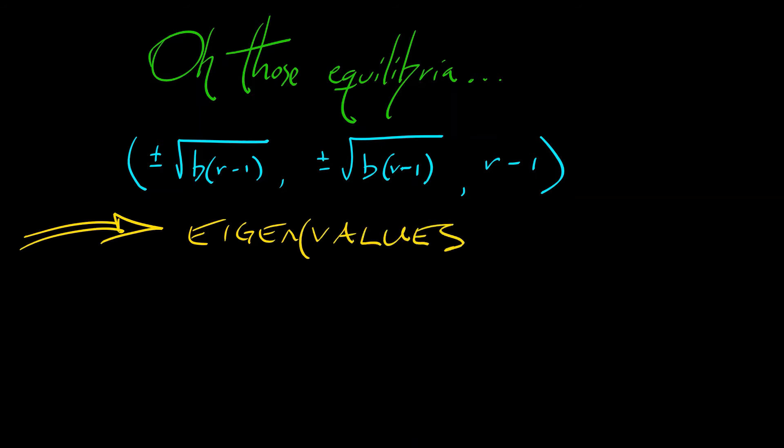If we linearize at those points, look for the eigenvalues of the linearization, we have the characteristic polynomial lambda cubed plus quantity 1 plus b plus sigma times lambda squared plus b times quantity r plus sigma lambda plus 2 sigma b times quantity r minus 1. Set that equal to 0.